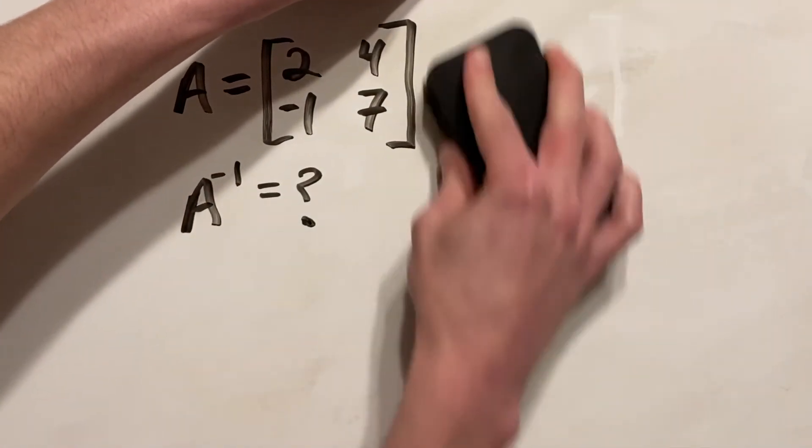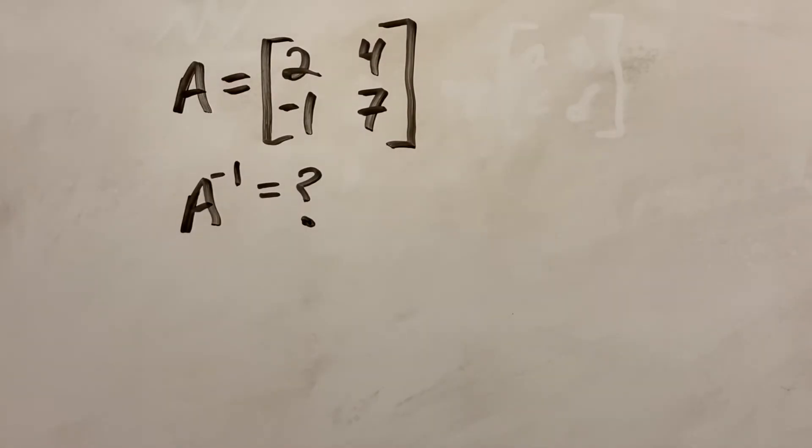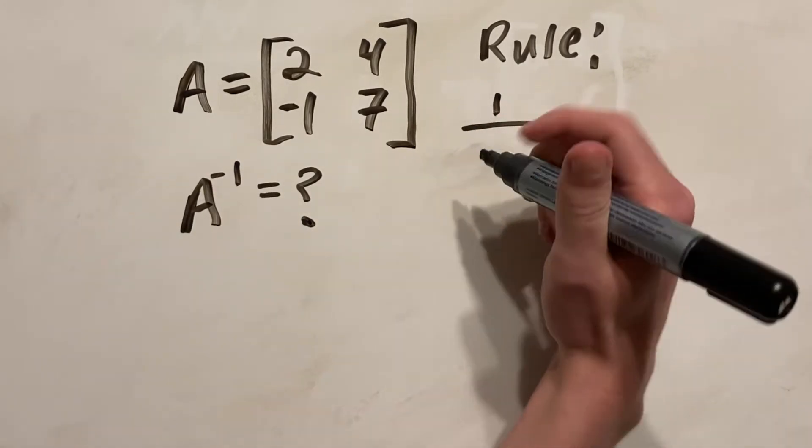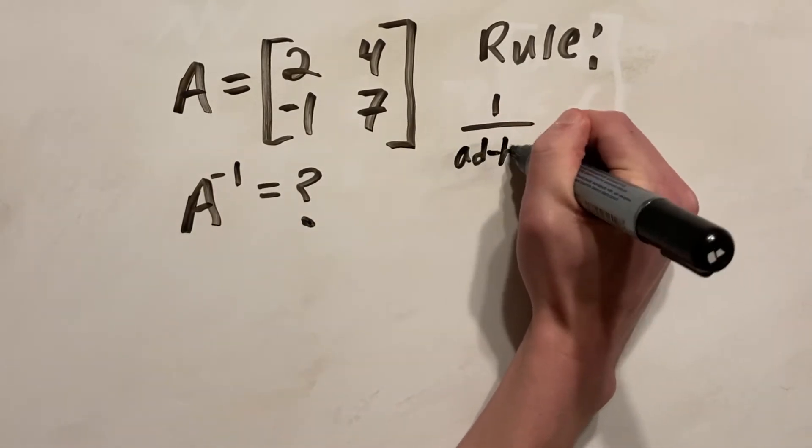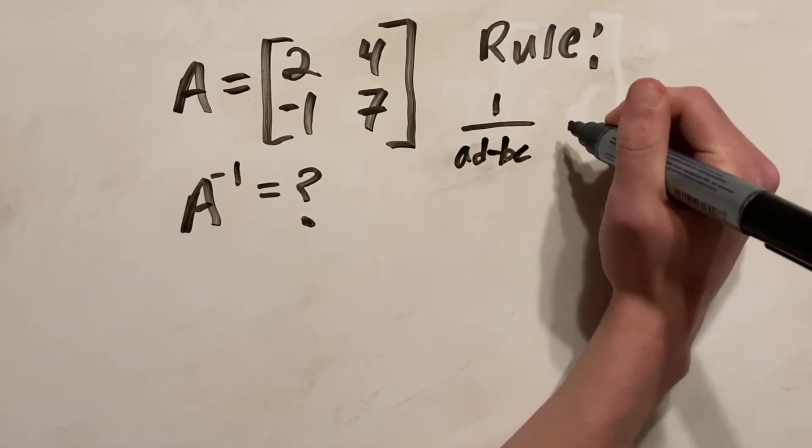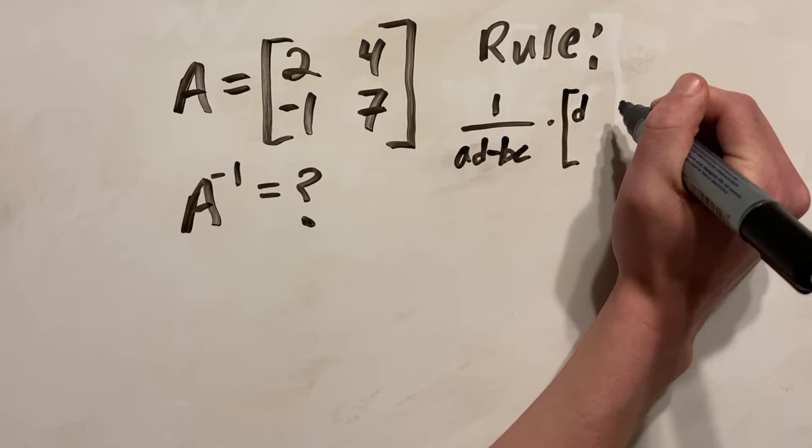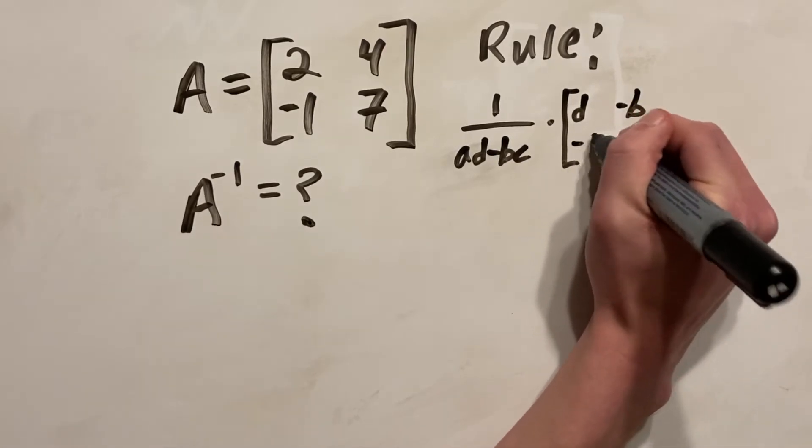Now that we know that, we can have a look at the formula to find the inverse of a matrix. So that rule to find the inverse of a matrix is 1 over AD minus BC times the matrix D, negative B, negative C, and A.